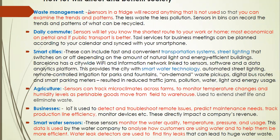Waste management: sensors in a fridge will record anything that is not used so that you can examine the trends and patterns. The less waste, the less pollution. You can also have sensors in bins which can record the trends and patterns of what can be recycled.